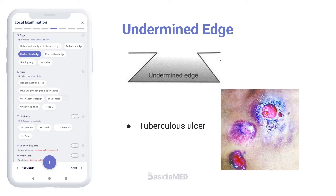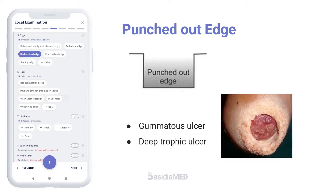These are commonly seen in tuberculous ulcers. When the edge of an ulcer drops down at right angle to the skin surface as if it has been cut out with a punch, it is called a punched out edge or square cut edge. This indicates rapid death of a whole thickness of skin without the body making much attempt to repair the defect. This type of edge is commonly associated with gummatous ulcers and deep trophic ulcers.